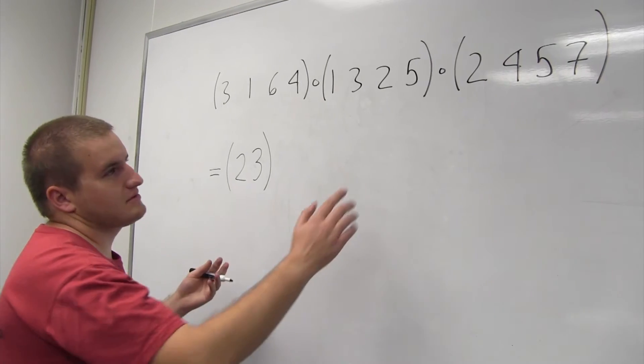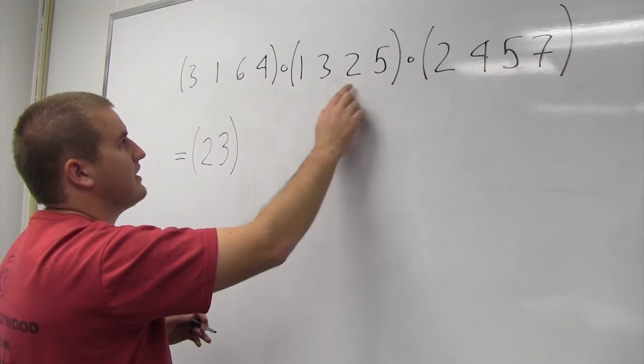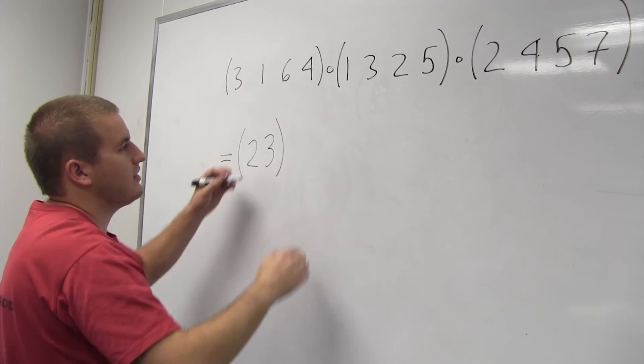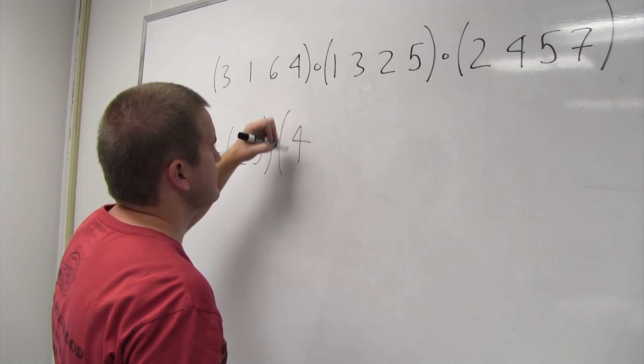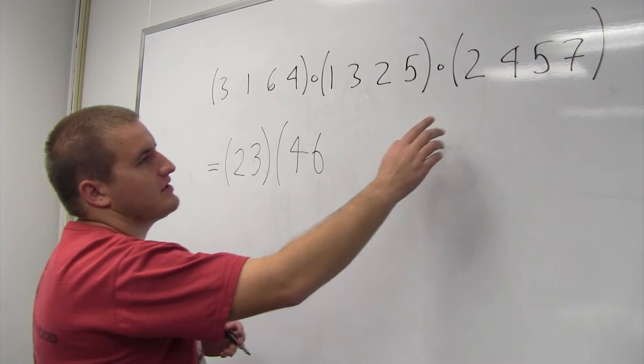And next, let's just keep going up, and we'll look at 4. 4 goes to 5 here, and then 5 ends up going to 1 here, and 1 goes to 6 here. So overall, our 4 goes to 6. And because we have 6 here, we're going to keep going with the 6.